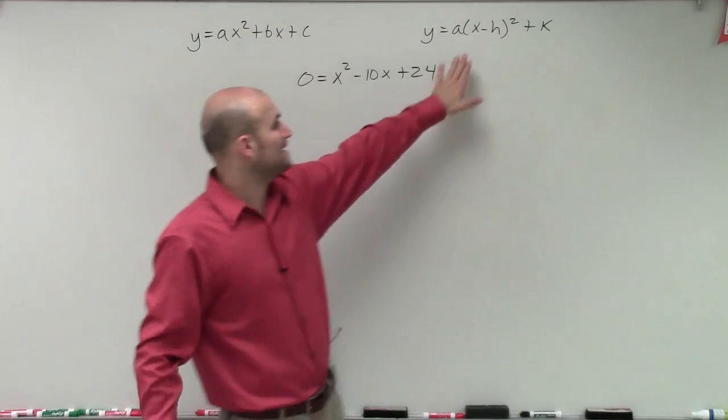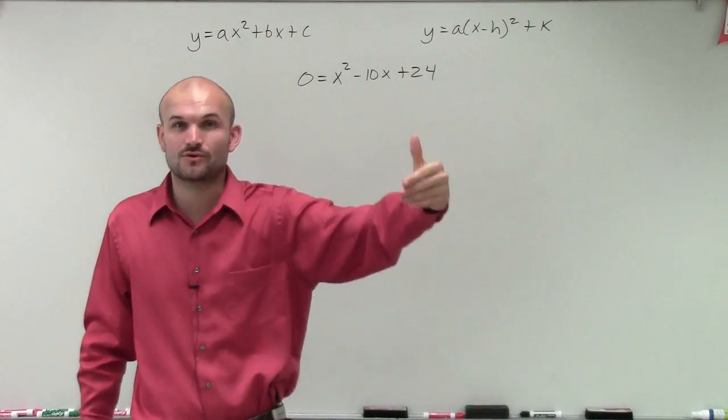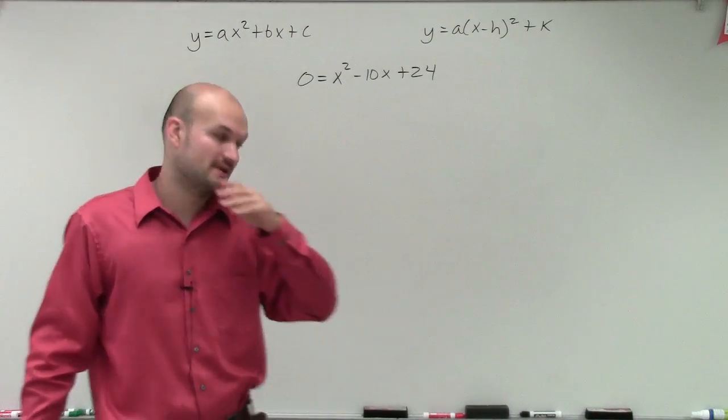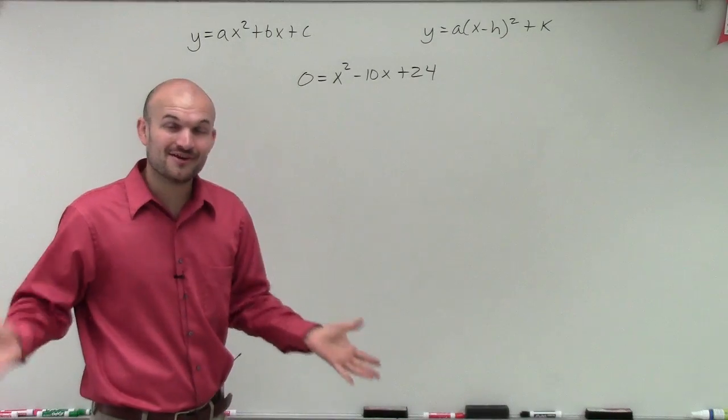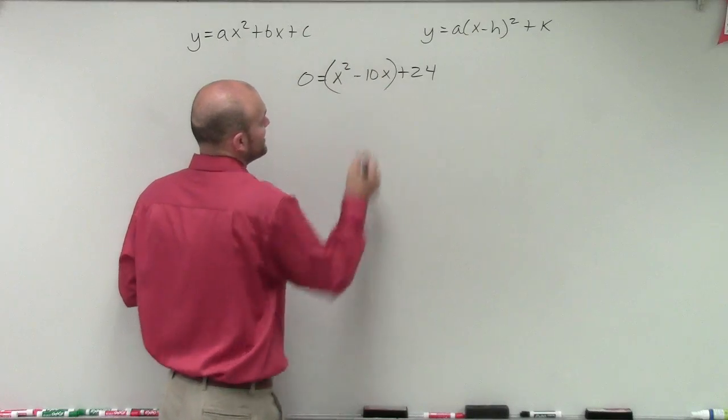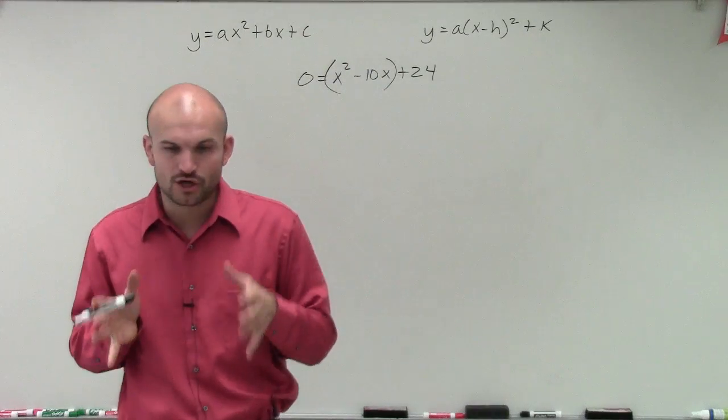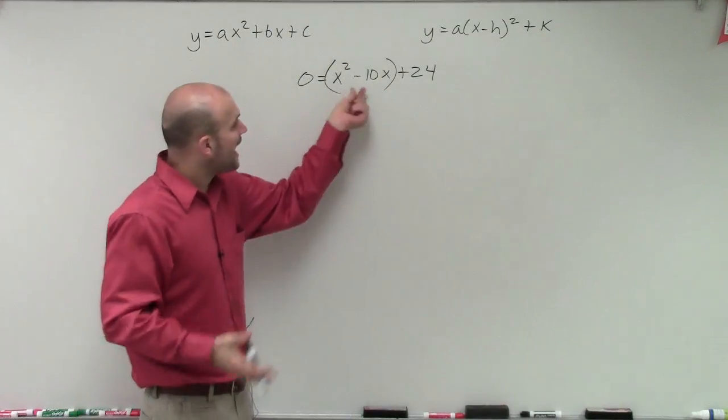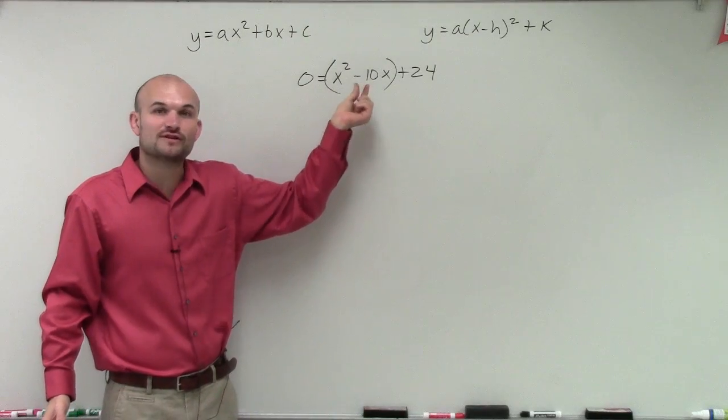So to do that, we need to create a binomial squared. And to create a binomial squared, we have to create a perfect square trinomial. And to create a perfect square trinomial, we need to find the value of c that is going to complete the square. And what I mean by that is if I just isolate my first two terms, my quadratic and my linear term, I want to make this a perfect square trinomial.